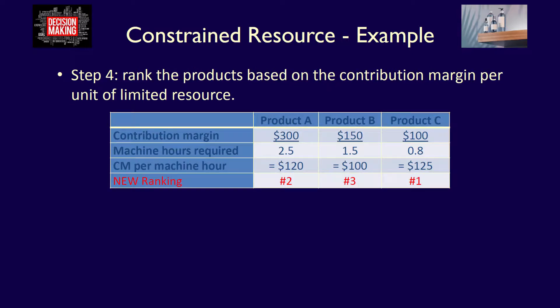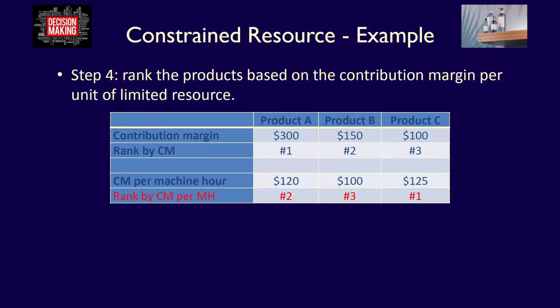Notice the ranking of products now. In order to maximize income, the company should produce product C first, earning $125 per machine hour. If they still have machine hours left over, they should produce product A, which earns $120 per machine hour. Finally, product B would be produced last because it only earns $100 per machine hour. Product C has moved from third to first. By using our understanding of how a limited resource is consumed by each product, we are able to maximize the contribution margin for the company overall.